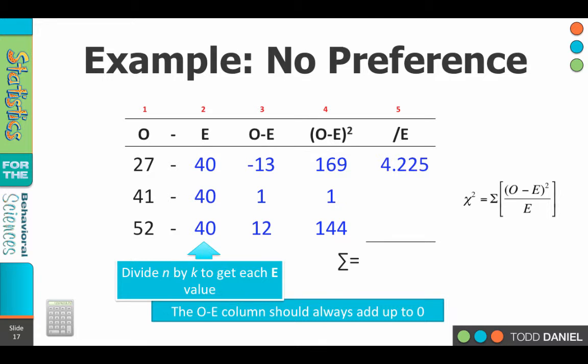169 divided by 40, 4.225. 1 divided by 40, 0.025. And 144 divided by 40, 3.6.